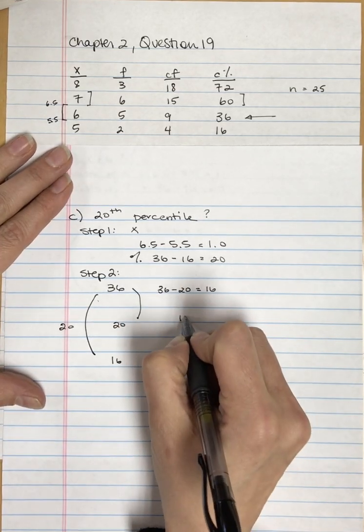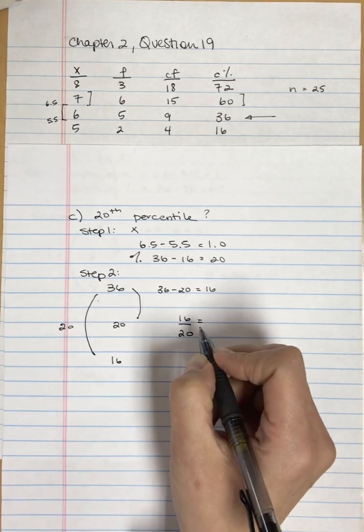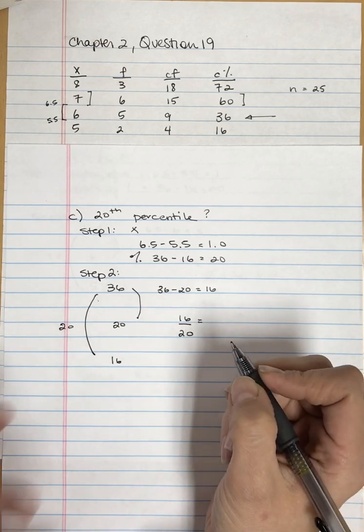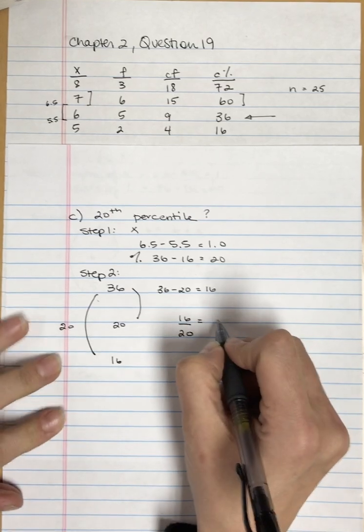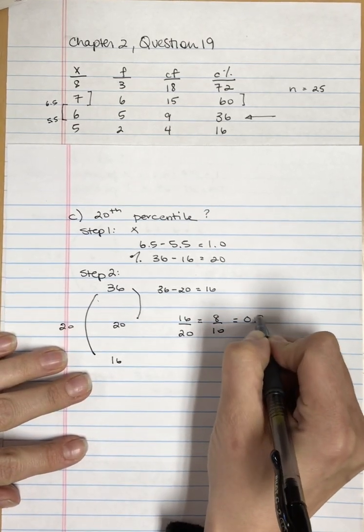So 16 divided by 20 equals—sorry, I don't trust my basic math skills. That is 8 out of 10, which equals 0.8.